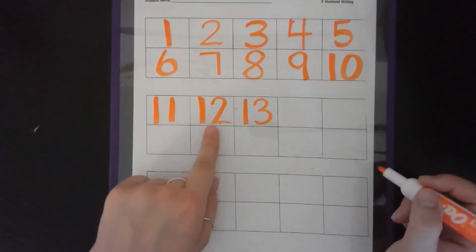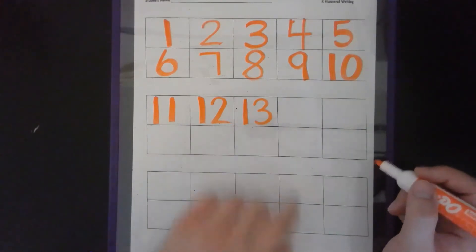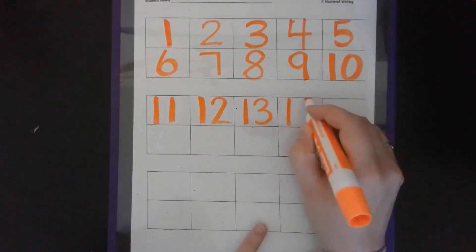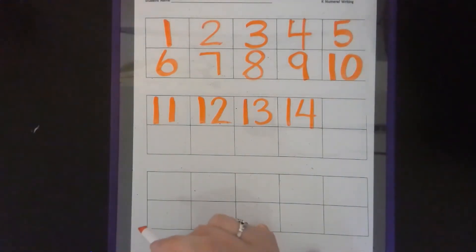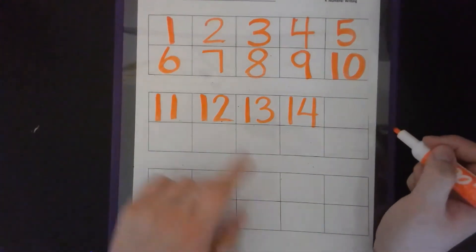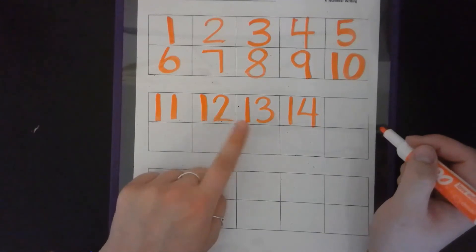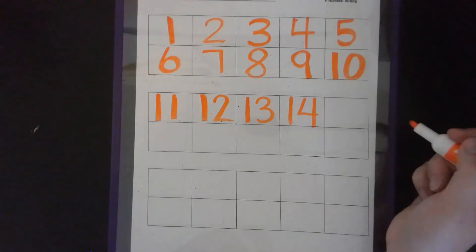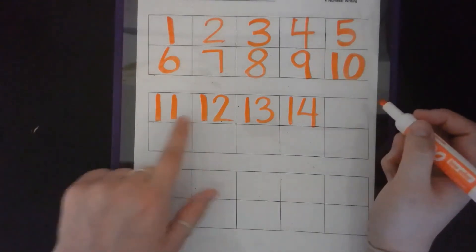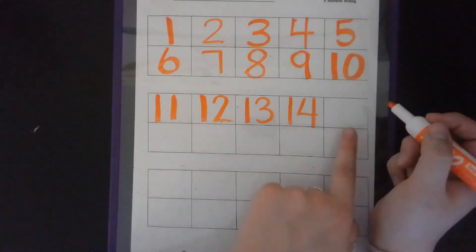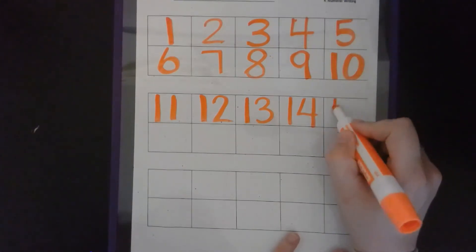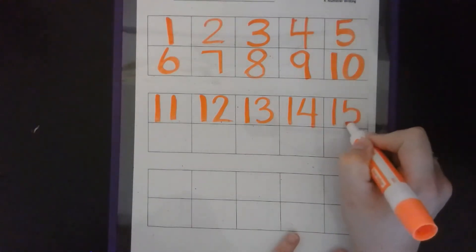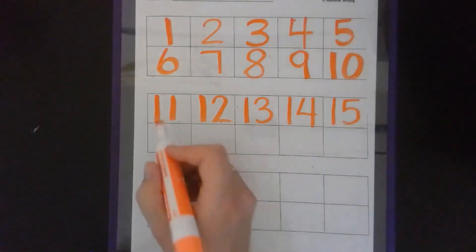So, we have 11, 12, 13, 14. 14 is a one and a four. Make sure you're checking to see if your numbers look like mine. You don't want to have any backwards twos or any backwards threes. You want to make sure all of your numbers are looking the right way. So, we have 11, 12, 13, 14, 15. 15 is a one and a five. And we have 16, one and six.